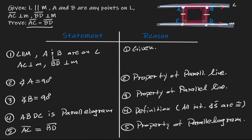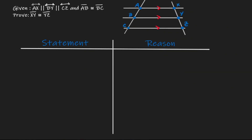Now let's take a look at our second example. What we essentially have here are three parallel lines. AX is parallel to BY, and BY is parallel to BZ. In addition, we know that line segment AB is congruent to line segment BZ. What we want to show is that XY is congruent to YZ — in other words, if three parallel lines cut a transversal in half, we want to show the same is true on the other side.